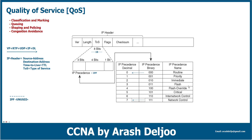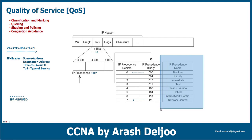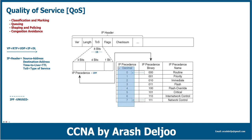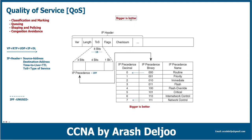You might ask whether you need to remember all these names — the answer is no. It's not necessary to memorize the names of IP Precedence values because in most cases we don't use the names; we use the decimal value. The rule for using IP Precedence is simple: bigger is better.